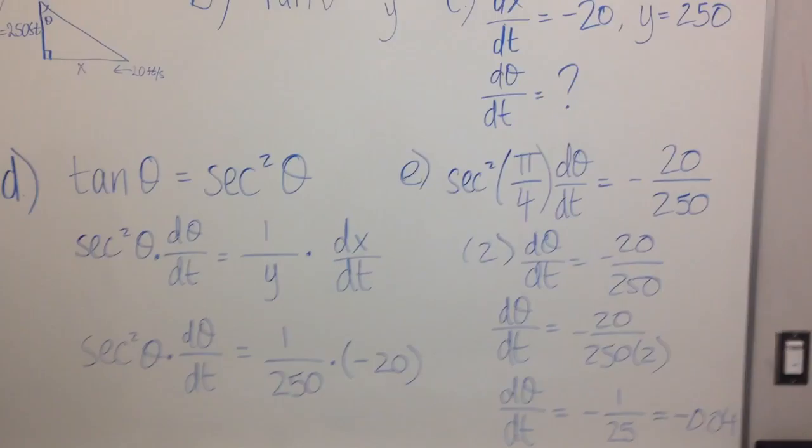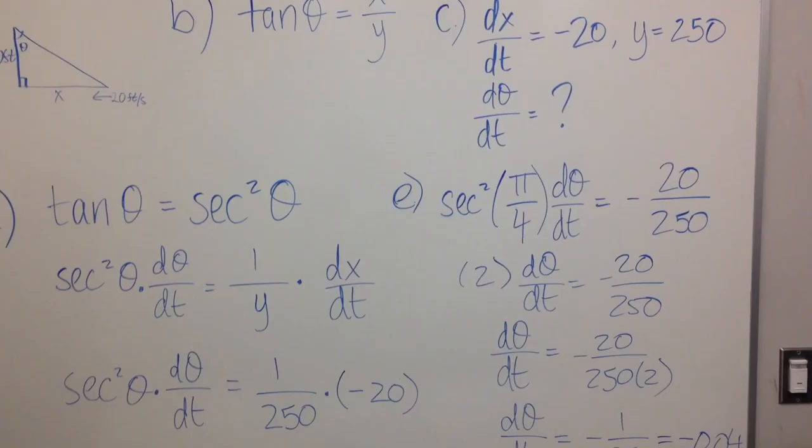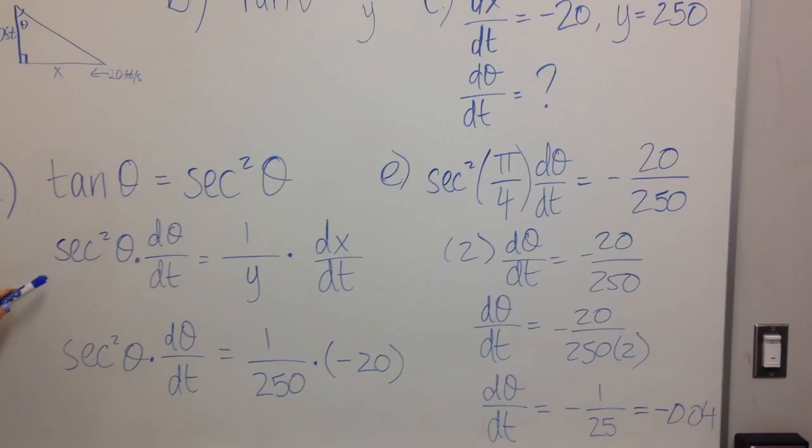So we set up the equation as secant squared theta times the derivative of theta with respect to t equals 1 over y times derivative of x with respect to t.